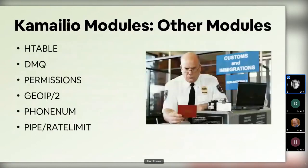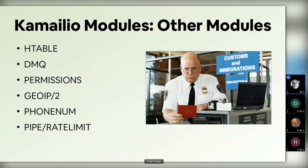Some other modules work well with determining if traffic is unwanted. Daniel has a great quote: 'If you're not using htable, you're doing something wrong.' htable is a hash table in memory that lets you store information like an IP address sending unwanted traffic. DMQ is the Kamailio Distributed Messaging Queue — it allows you to share information across all your Kamailio nodes. If you block on one, that IP is blocked on all ten — a phenomenal use case for DMQ.